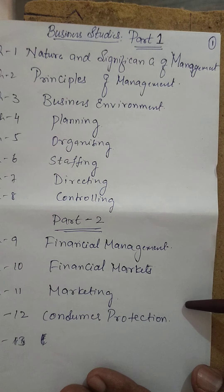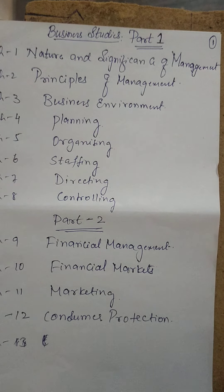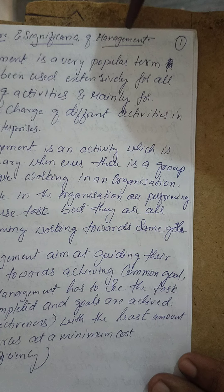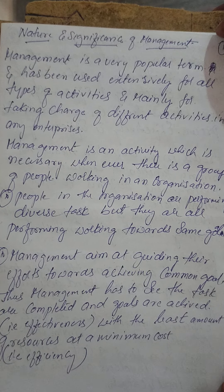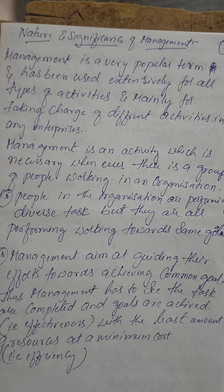The stepping stone to success begins from PUC level itself. Lastly, chapter twelve deals with consumer protection — how consumers are protected, what rules apply, and what organizations and NGOs are there to protect them. Now let us start with chapter one: nature and significance of management. In any organization there should be management; without management no activity or process takes place.